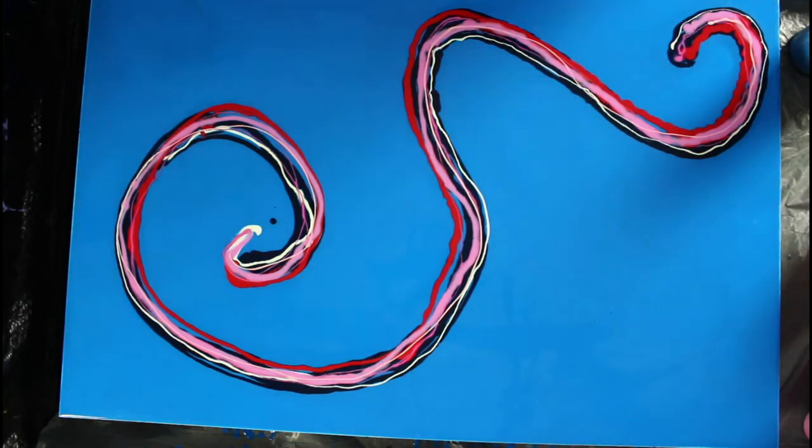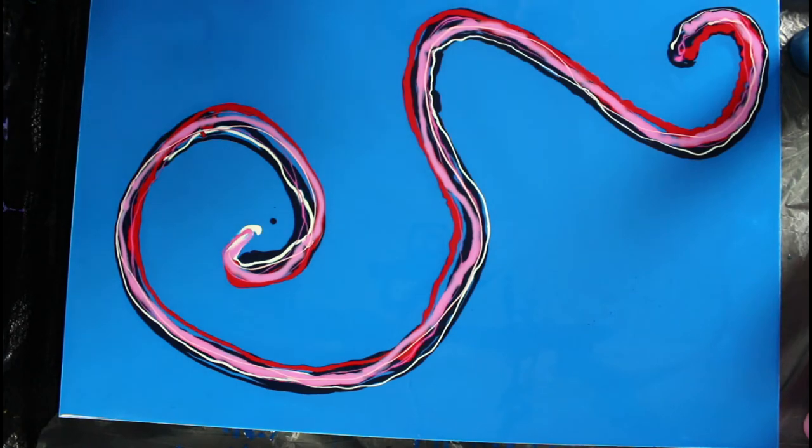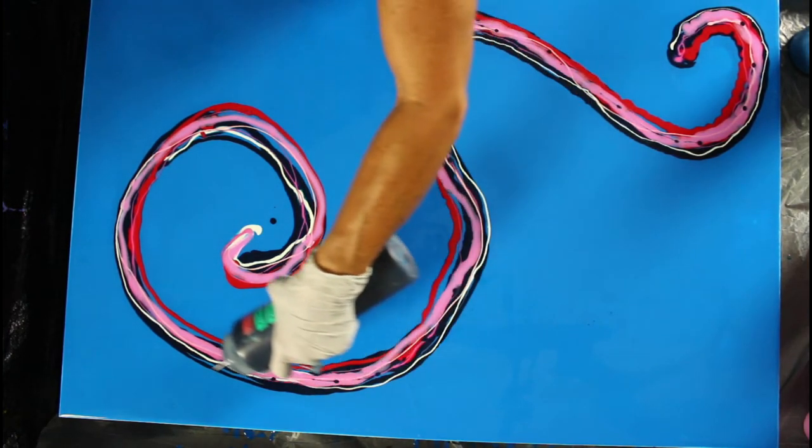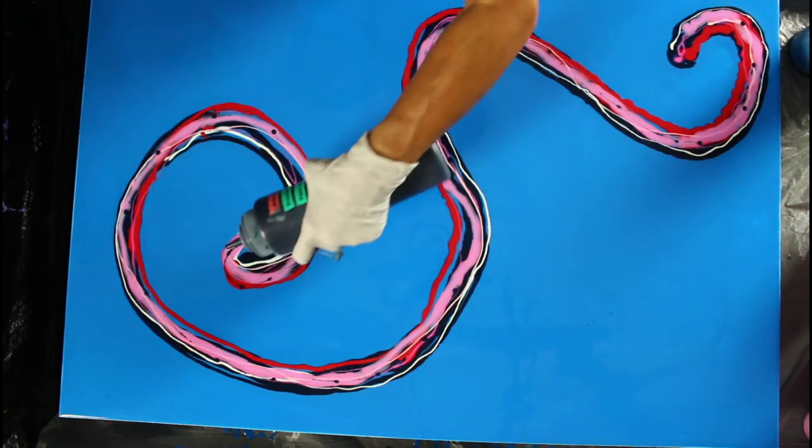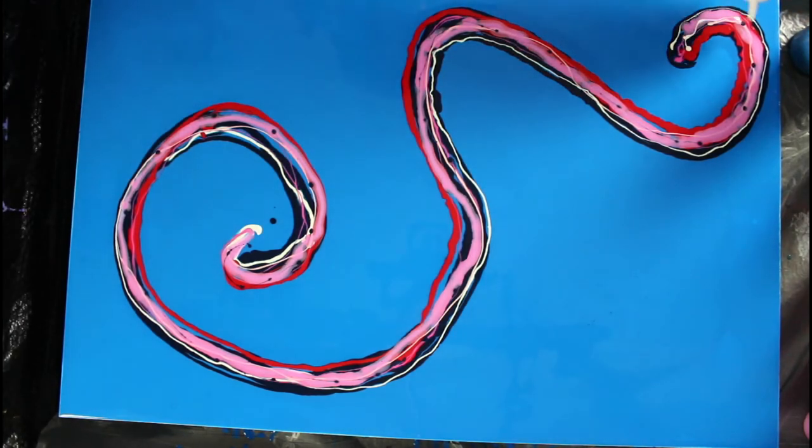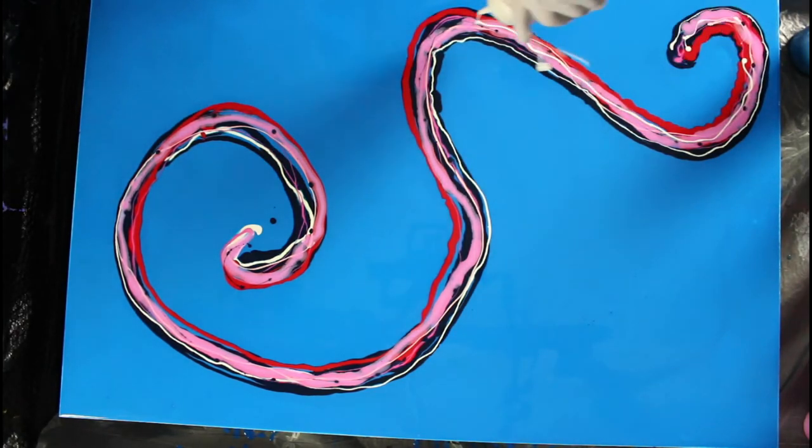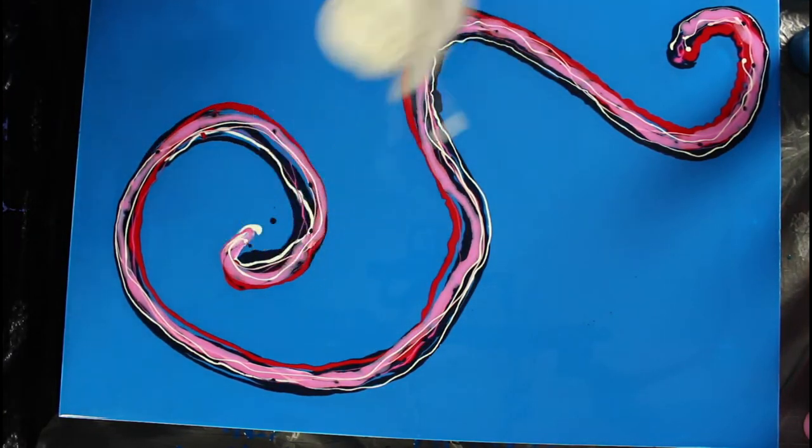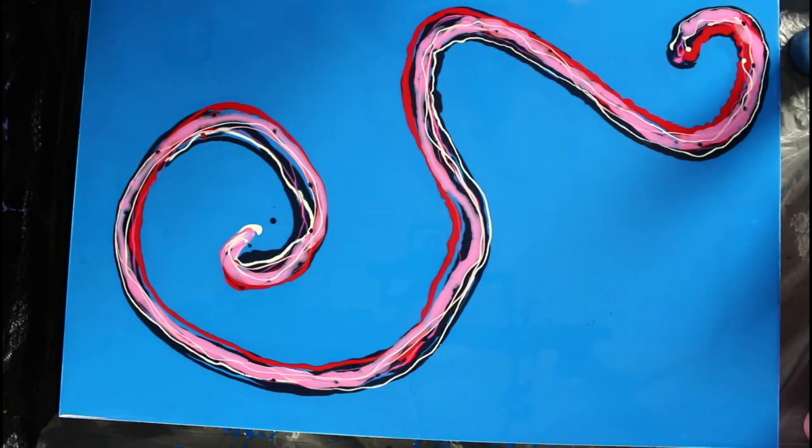I'm gonna put a little more of this Prussian, not a lot. Well, I got a good bit. I'm just gonna kind of drip it, drip it across. And a little more white and gold. This gold is also Amsterdam, it's light gold.